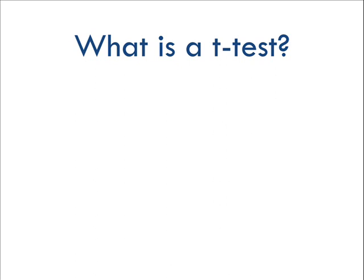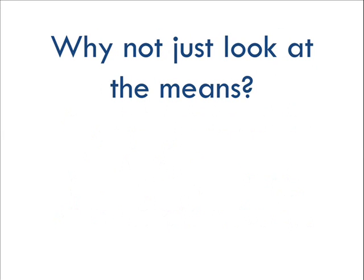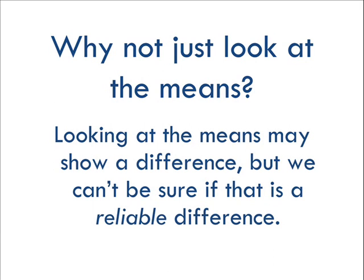So what does a t-test do? It's very simple. A t-test checks if the averages, or means, of two groups are reliably different. That's all it does. You may ask, well why not just look at the means? Looking at the means may tell us if there's any difference at all, but that doesn't tell us if the difference is reliable.